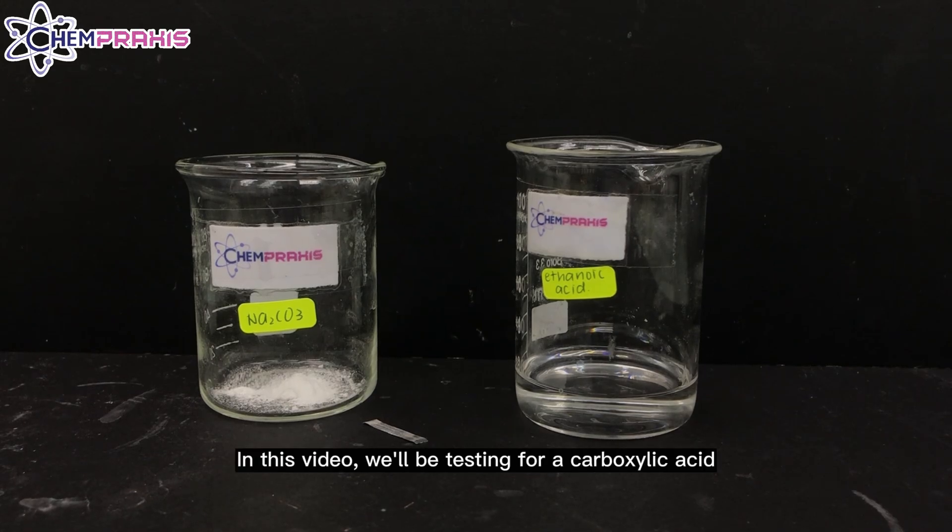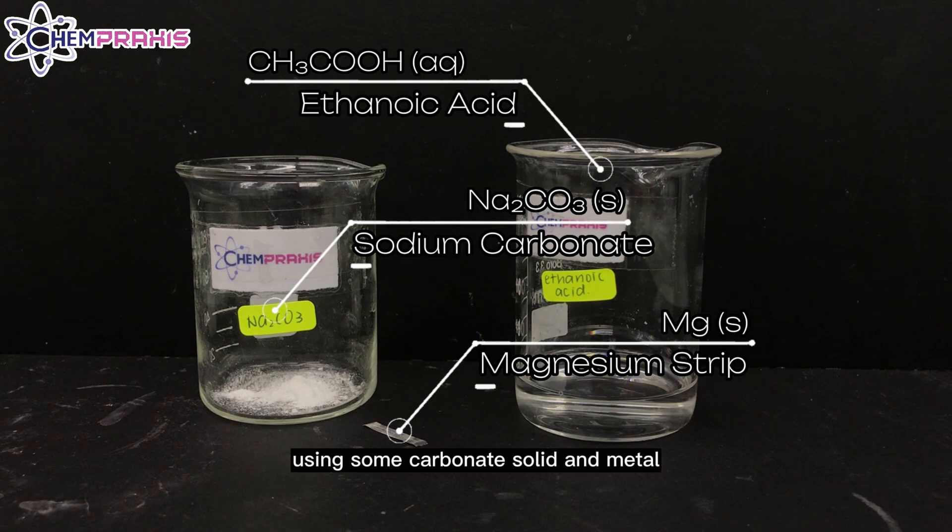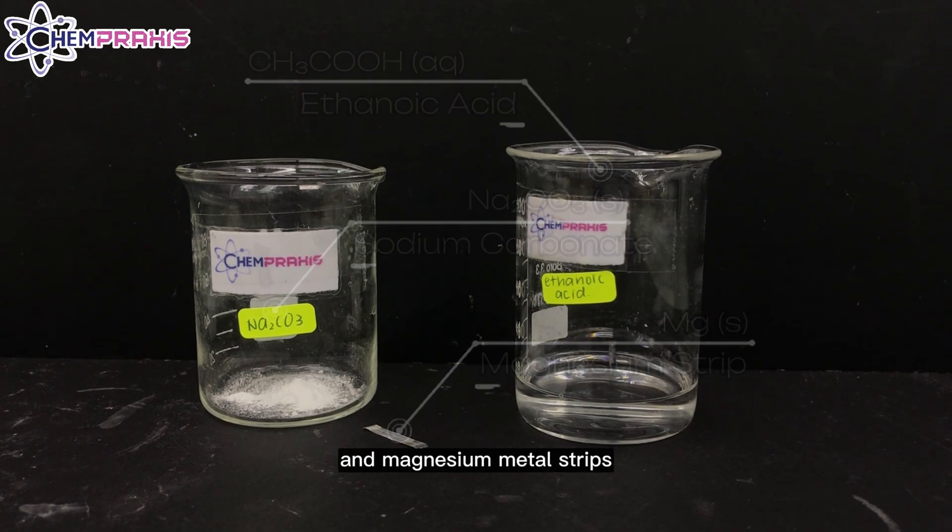Hello, we're from ChemPraxis. In this video, we'll be testing for a carboxylic acid using some carbonate solid and metal. Here, we have sodium carbonate and magnesium metal strips.